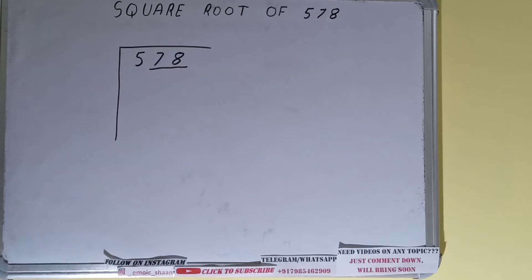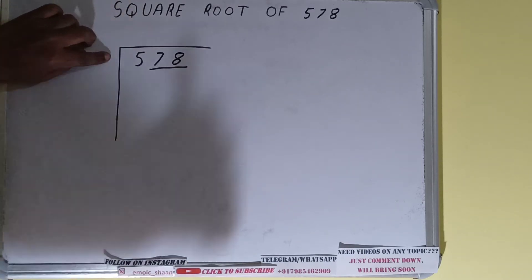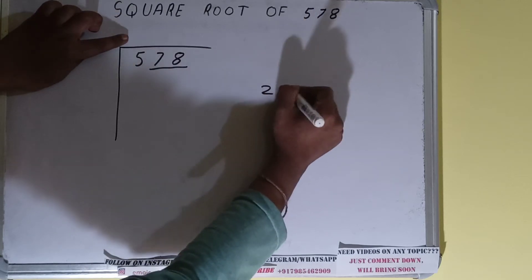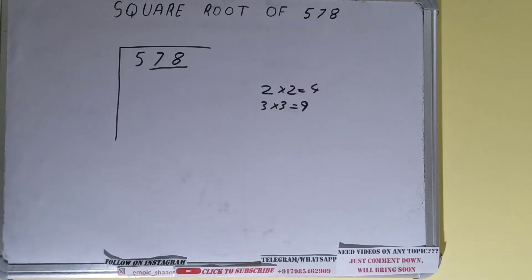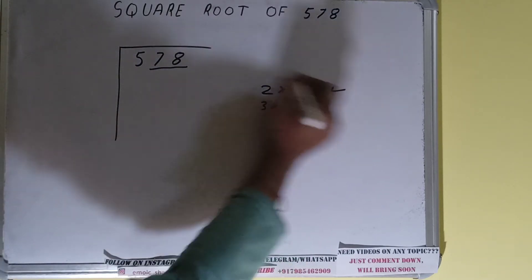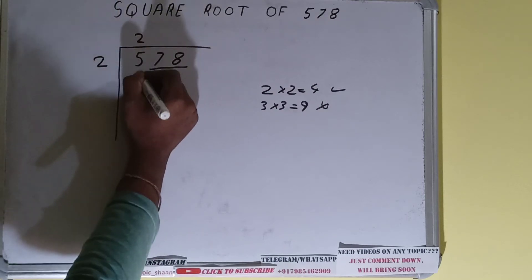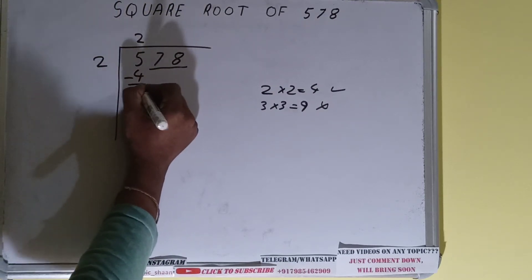The rule is whatever number we write here we have to write here also. So if we write 2 here and 2 here it will give 4. If we write 3 here and 3 here it will give 9. 9 we cannot use because it is greater than 5. So we have to use this 4. So 2 here and 2 here will give 4. Subtract and 1 will be left.